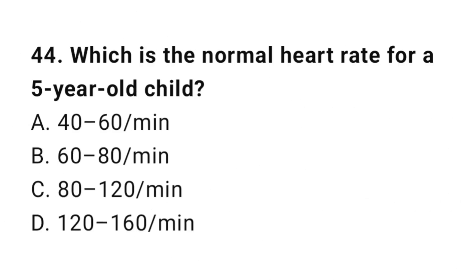Question 44: Which is the normal heart rate for a 5-year-old child? The right answer is C: 80 to 120 per minute.